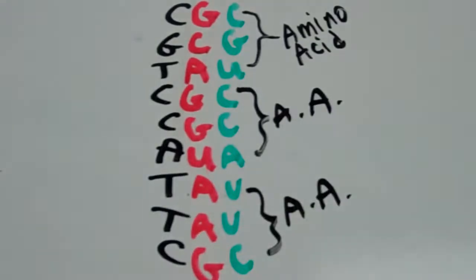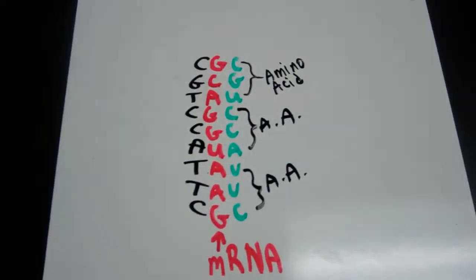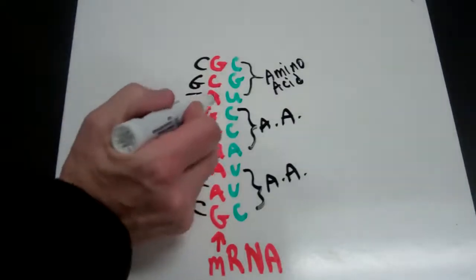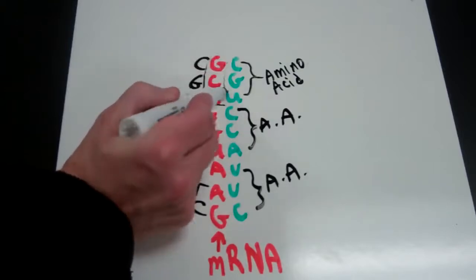And you can actually look up on a table which amino acid is being carried by those tRNAs. When you use a table, it's probably going to be called a messenger RNA codon table. And so we would want to read the codons from our messenger RNA. So my first codon that I'd want to look up is this one right here. This is my messenger RNA.